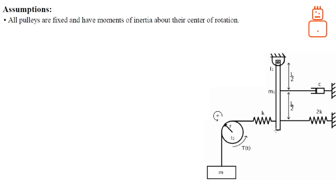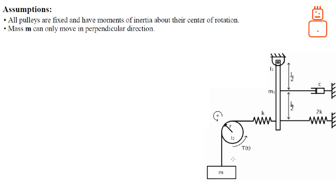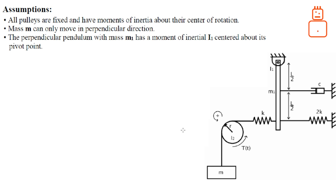Let's state the assumptions. The first assumption is that all pulleys are fixed and have a moment of inertia about their center of rotation — in other words, they are homogeneous and the moment of inertia is about their center of rotation. The other important assumption is that the mass only has one movement, which is vertical — it doesn't move horizontally or wobble; it moves only along the vertical axis.